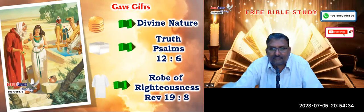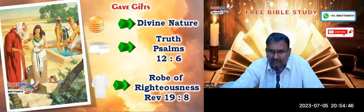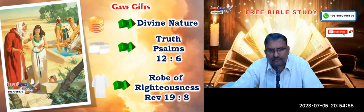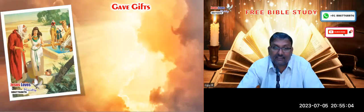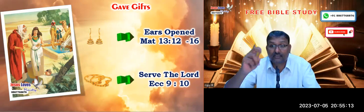God gives us more understanding of the Bible. Revelation 19:8: 'And to her was granted that she should be arrayed in fine linen, clean and white, for the fine linen is the righteousness of saints.' Earrings mean we should be very attentive to hear the word of God; bracelets mean we should always be ready to serve the Lord.